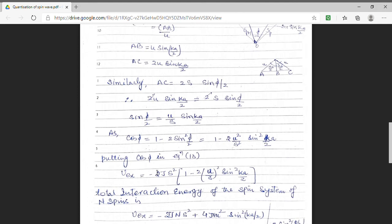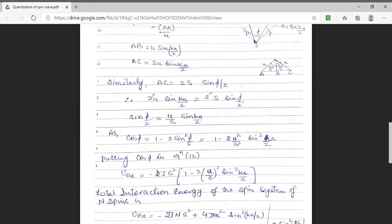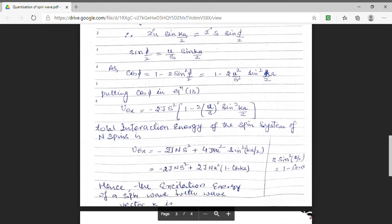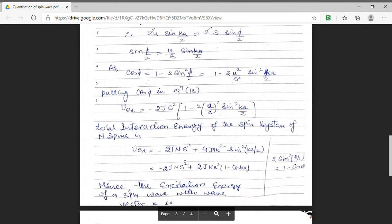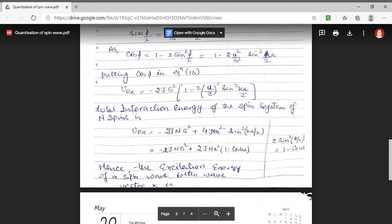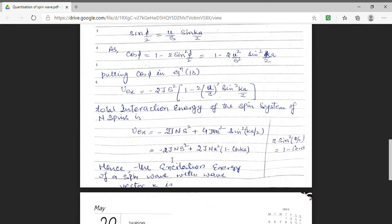The total interaction energy of spin systems is minus 2j ns square plus 4j nu square sin square Ka by 2. And since we know 2 sin square theta by 2 is equal to 1 minus cos theta, the total interaction energy comes out to be minus 2j ns square plus 2j nu square 1 minus cos Ka.